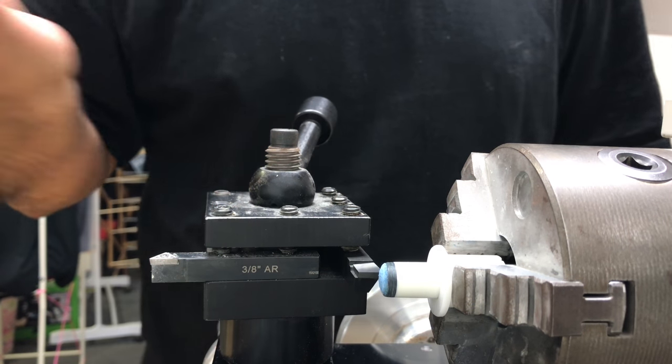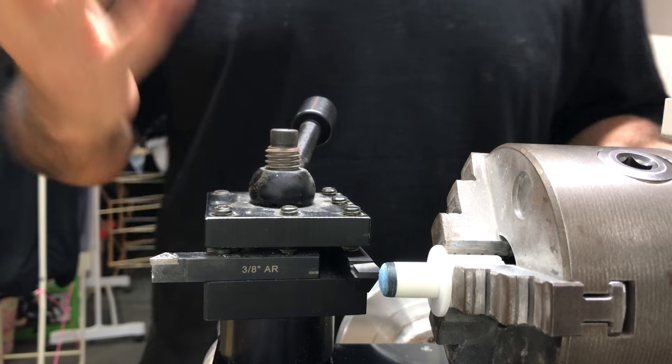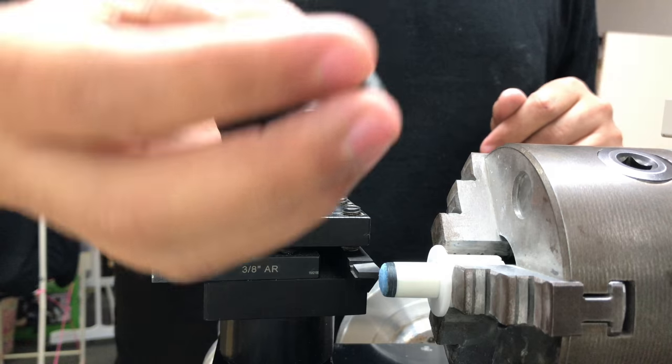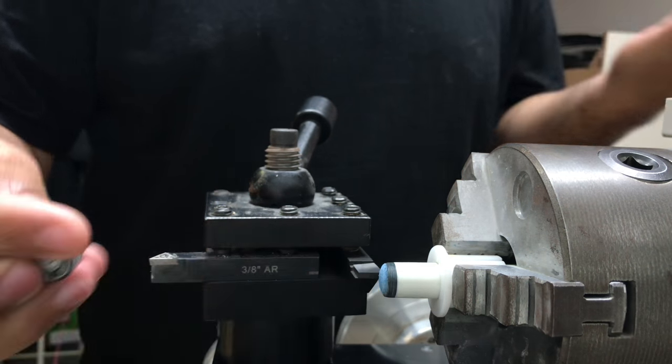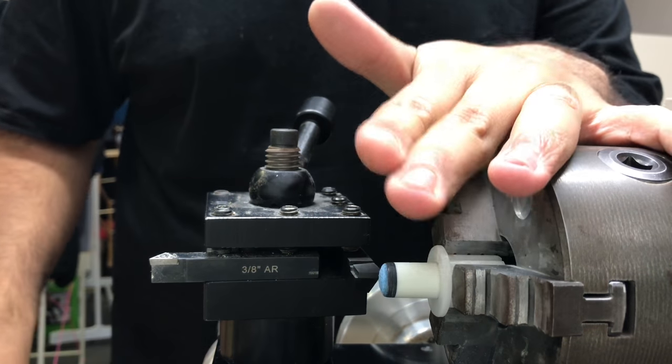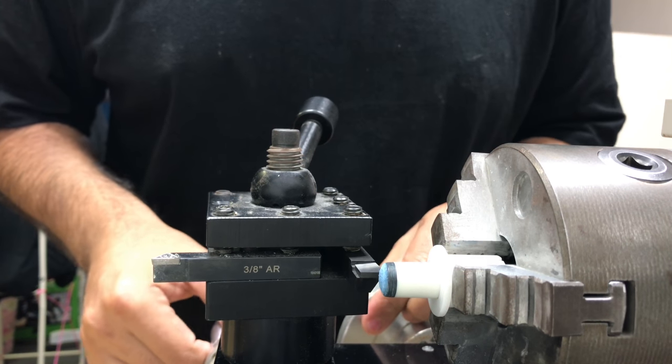Some of you may agree with the method I use, some people may disagree, but here we go. So we're gonna start off. I'm gonna be installing a Kamui Black Soft, which is my tip of choice, and we're gonna go ahead and face off, cut off the old tip. Let's do it.